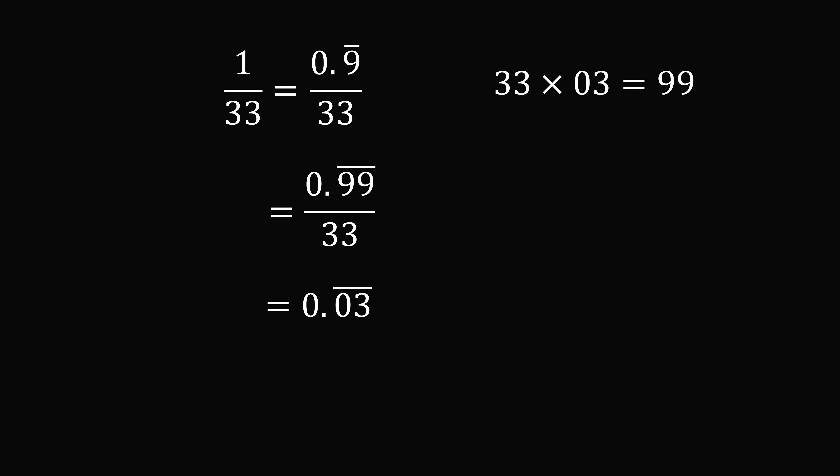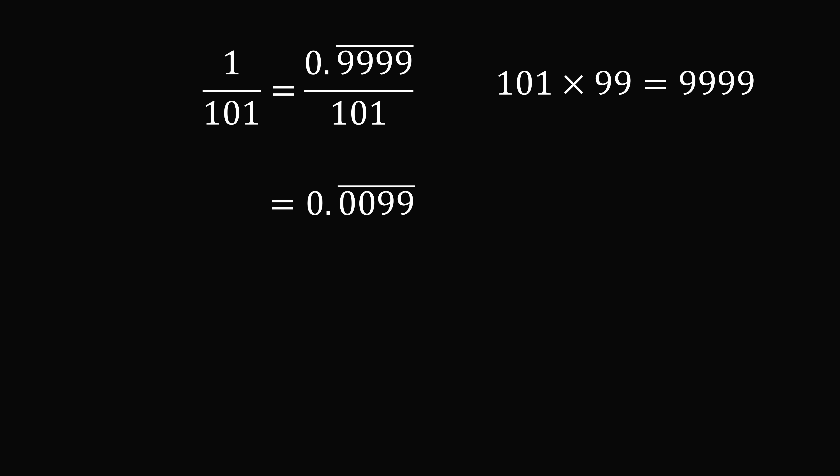Next problem. What is 1 divided by 101? We'll immediately think about our strategy. 101 times 99 is equal to 9,999. So we will represent 1 by 0.99 repeating. We can then do the division that this is equal to 0.0099 repeating. Notice we need 4 digits because we have 9,999 is 4 digits. So 1 divided by 101 is equal to 0.0099 repeating.